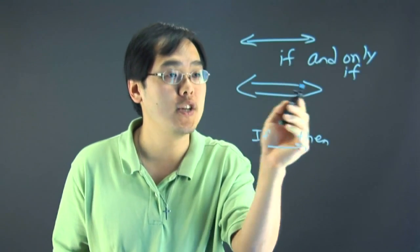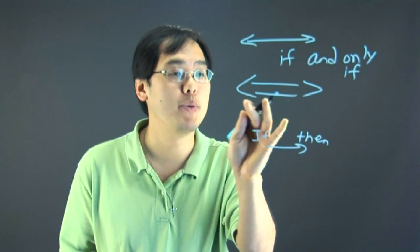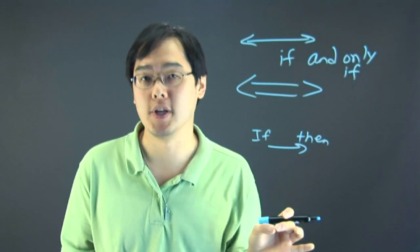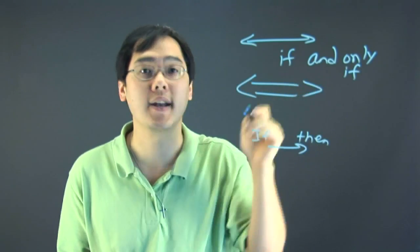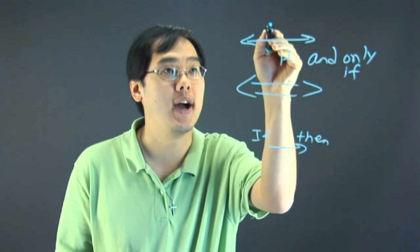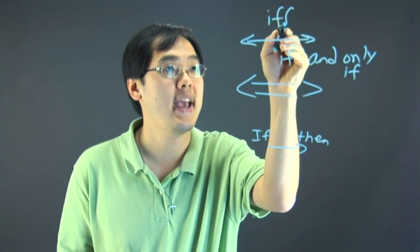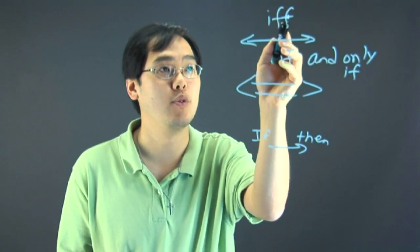A double arrow in a math problem means that both sides have to be true or both sides have to hold up. Now, shorthand for if and only if, just as an FYI, is IFF—if and only if.